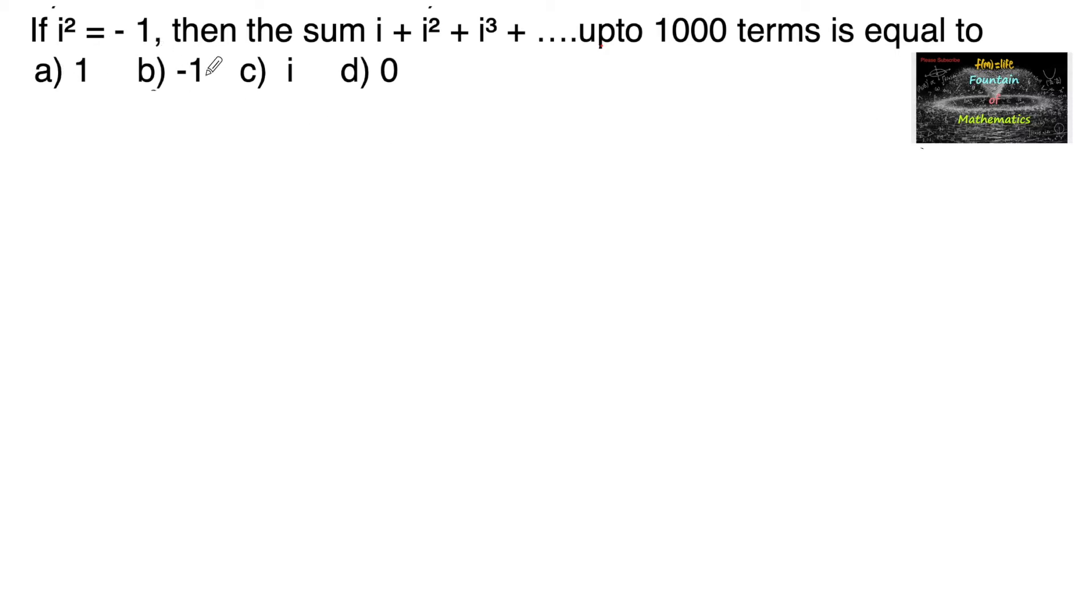If i² = -1, then the sum i¹ + i² + i³ + i⁴ and so on, up to i¹⁰⁰⁰, 1000 terms total, is equal to what? Let us use the concept here.